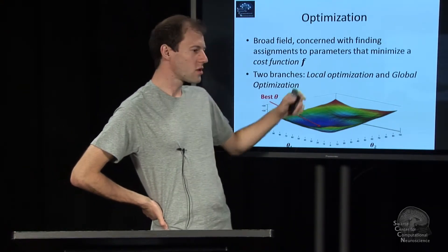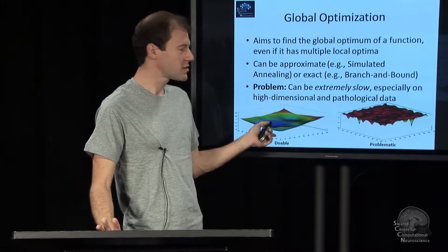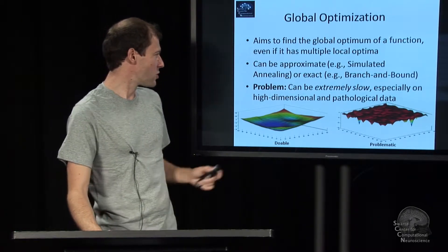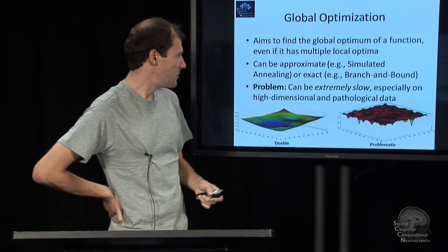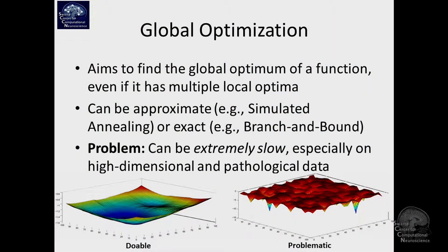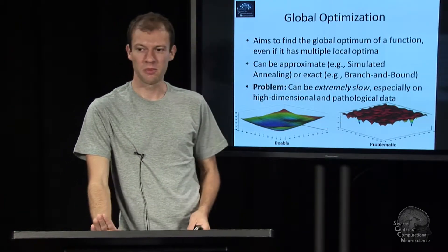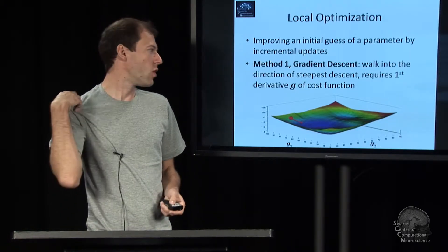Generally it's about finding an assignment of parameters such that your cost function is optimal. This works in any number of dimensions. There's two big branches: local optimization and global optimization. Global optimization is concerned with finding the global optimum of the function even if there's multiple local optima. There's approximate techniques such as simulated annealing and exact methods that assume something about the slope of the function. The trouble is these can be very slow, especially if you have pathological data. It might take very long, and if this is high dimensional it can be absolutely impossible if you have a malformed problem.